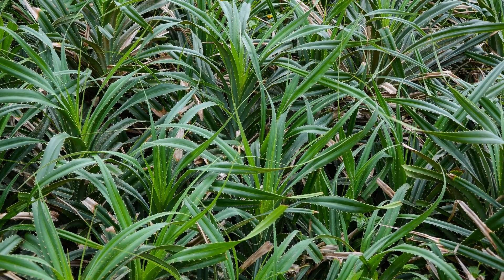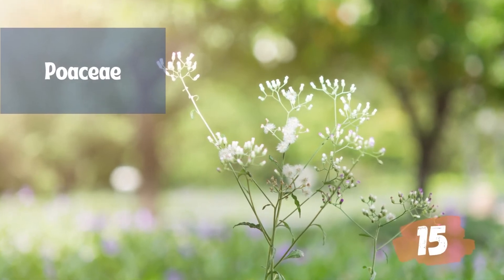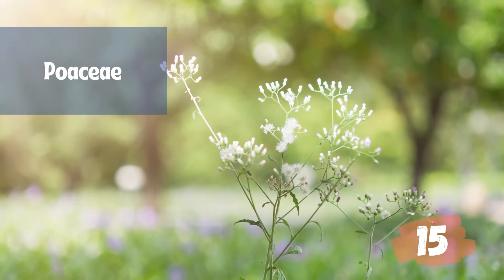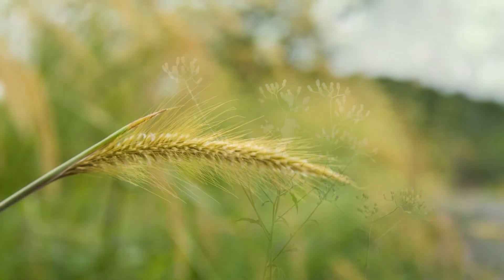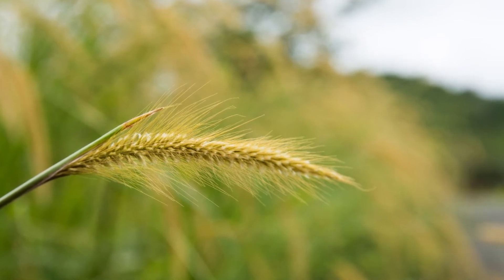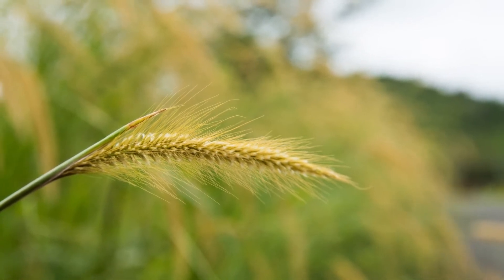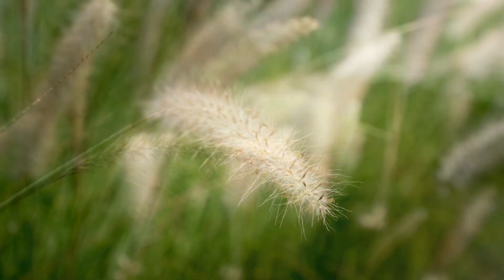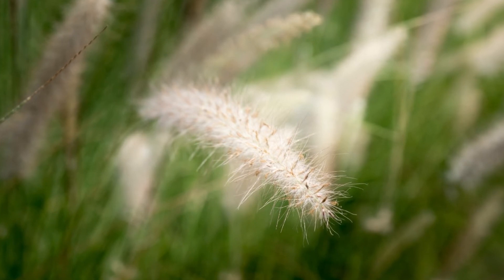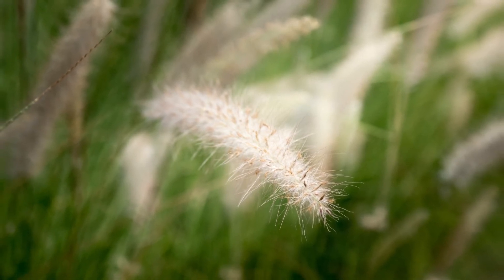Poaceae or Gramineae is a large and nearly ubiquitous family of monocotyledonous flowering plants, commonly known as grasses. It includes the cereal grasses, bamboos, and the grasses of natural grassland and species cultivated in lawns and pasture. The roots can be fibrous, adventitious, branched, or stilt. The stem may be underground as in rhizomes, cylindrical with conspicuous nodes and internodes, woody or herbaceous. The leaves are alternate, simple, exstipulate, and distichous; the leaf base forms a tubular sheath.